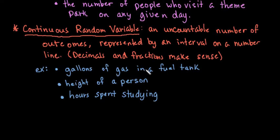When you're filling up the gallons of gas, it doesn't automatically go from one gallon to two gallons. You go through all the increments between one and two gallons before you get to two gallons. The height of a person would be another continuous random variable, or the hours spent studying. For a continuous random variable, the graph is represented by a smooth curve.